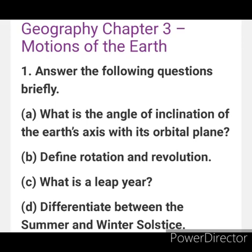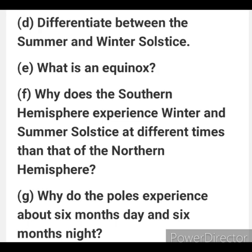Now the question and answers. Answer the following questions in brief. Question A: What is the angle of inclination of the Earth's axis with its orbital plane? Question B: Define rotation and revolution. Question C: What is a leap year? Question D: Differentiate between the summer and winter solstice. Question E: What is an equinox? Question F: Why does the Southern Hemisphere experience winter and summer solstice at different times than the Northern Hemisphere? Question G: Why do the poles experience about six months of day and six months of night?